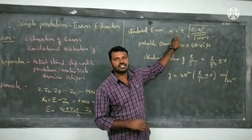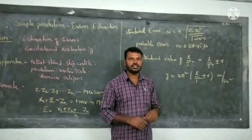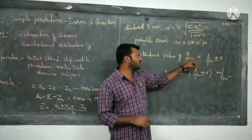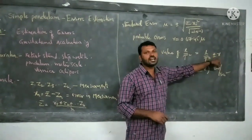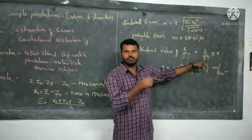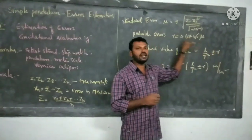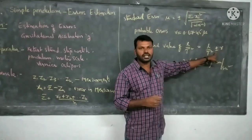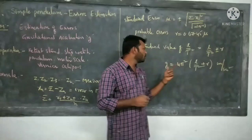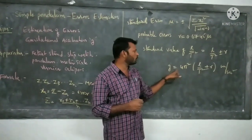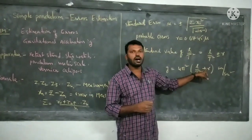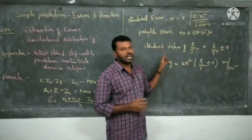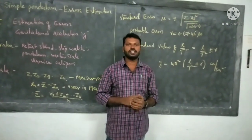Once you calculate these errors, you can calculate the accurate value of G. The accurate value of L by T squared — that means without any error — is given by L/T² plus or minus R, where R is the probable error. G is equal to 4π² times (L/T² ± R), depending on the value. If you calculate the G value this way, you will get approximately 980 centimeters per second squared.